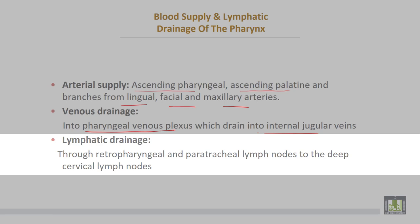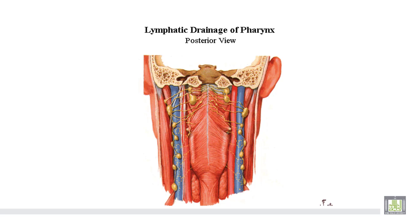Lymphatic drainage is through retropharyngeal and paratracheal lymph nodes to the upper deep cervical lymph nodes, arranged around the carotid sheath forming upper and lower deep cervical lymph nodes.